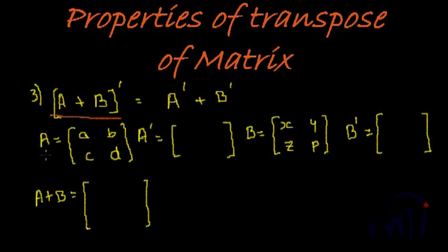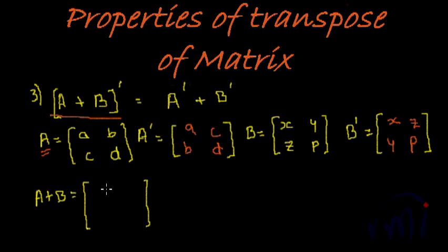Let us check it with an example. Here we have matrix A and its transpose A', where diagonal elements a and d remain the same and non-diagonal elements b and c are flipped. We also have matrix B and its transpose B', where diagonal elements x and p remain the same and non-diagonal elements get flipped. Now A plus B is formed by adding the corresponding elements, giving: a+x, b+y, c+z, d+p.